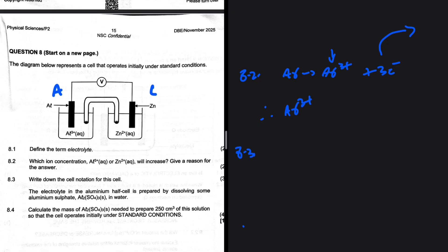8.3. Write down the cell notation for this cell. The electrolyte in the aluminum half cell is pre... Okay. No, I'm moving to 8.4. 8.3.